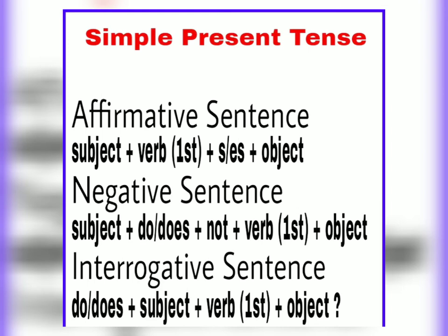The second type is the negative sentence. The structure is: Subject + helping verb (do/does) + not + first form of verb + Object. You do not write s or es here — just a simple do or does depending on the subject. Do is used for plural nouns and does is used for singular nouns. After 'do/does not,' you write the first form of the verb, then the object.